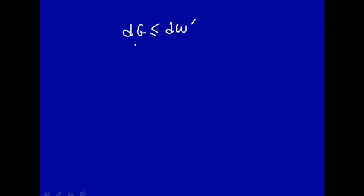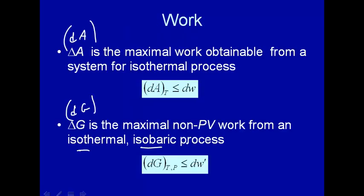For any real process, the work you get out would be less than the change in Gibbs free energy. So dG or delta G is the maximum non-PV work that you can get out of an isothermal, isobaric process. That's what this work is.